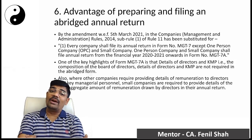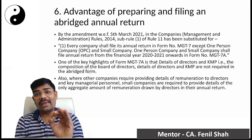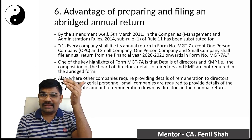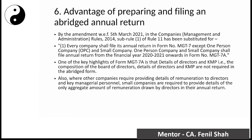The sixth benefit: the annual return. Normal companies file their annual return in Form MGT-7 under Section 92, which contains a lot of details. But if you are a small company, your form is Form MGT-7A. Every company files in MGT-7 except OPC and small companies. OPC and small companies shall file their annual return from financial year 2020-21 in Form MGT-7A.